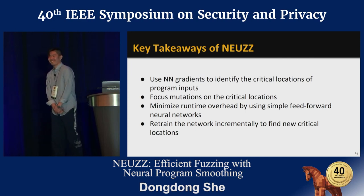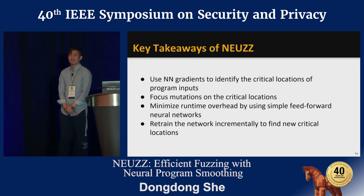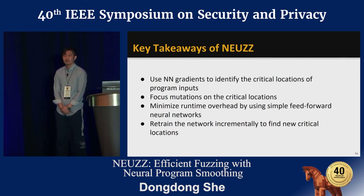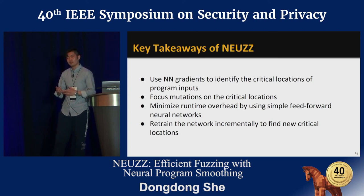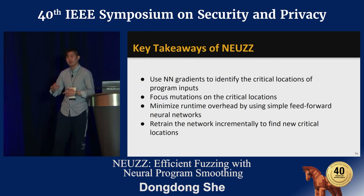Giovanni from UCSB. You said f(x) is the number of bugs an input finds—what are situations when you find more than one? At first we thought one input could only trigger one bug, like a crash. But we figured out that in some cases an input would cause a crash—say a buffer overflow—but before that, it may also have an integer overflow or memory leak that also happened. We considered those also as bugs. So we did find cases with more than one.